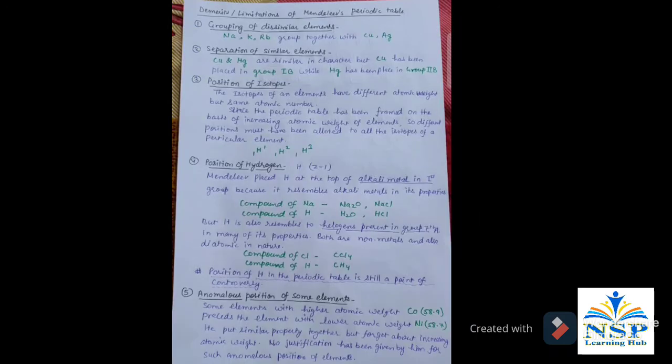The Demerits or Limitations of Mendeleev Periodic Table. Number 1: Grouping of dissimilar elements. Mendeleev grouped some elements which are dissimilar in characteristics. For example, Sodium, Potassium, and Rubidium grouped together with Copper and Silver.